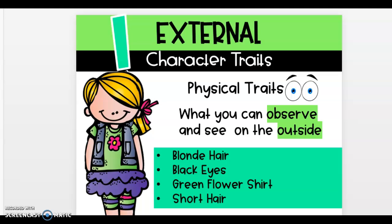External character traits are physical traits that you can see — notice the eyeballs. What you can observe and see on the outside. So on this person, you can tell she has blonde hair, black eyes, a green flower on her shirt, and her hair is short. Those are things that you physically can see because they are on the outside of her.